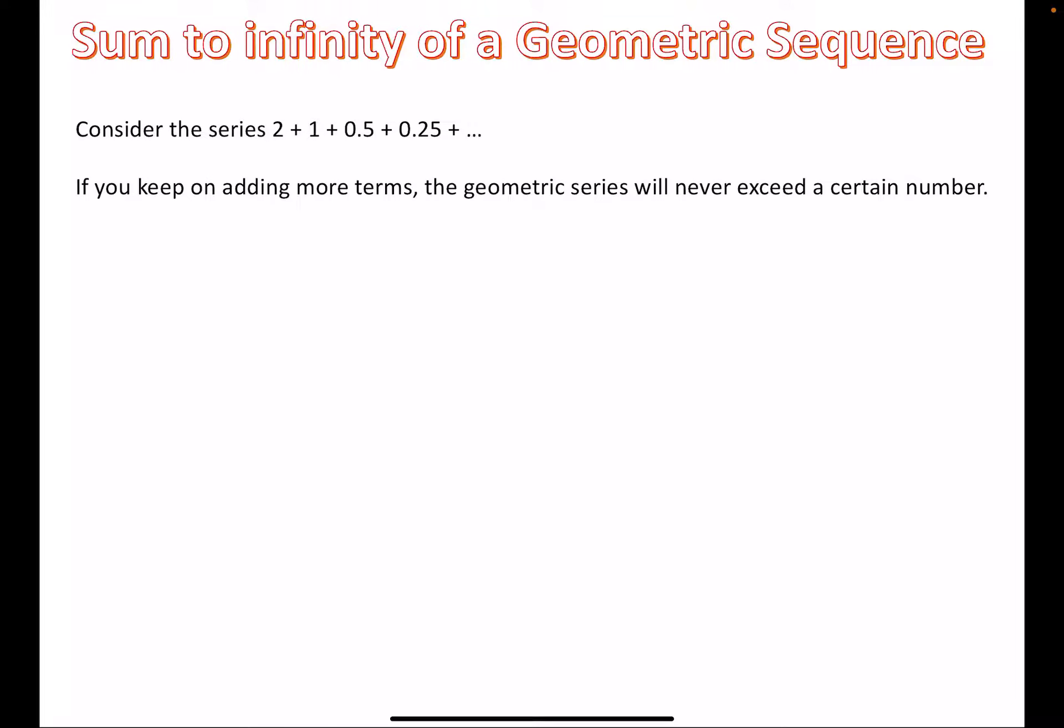If you keep on adding more terms, the geometric series will never exceed a certain number. The number that we add will get smaller and smaller until it's really, really small and it basically just won't exceed a certain number. This is called the limit of the series or the sum to infinity of the series.